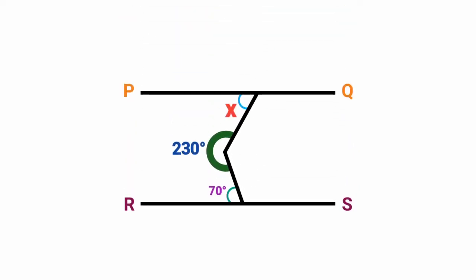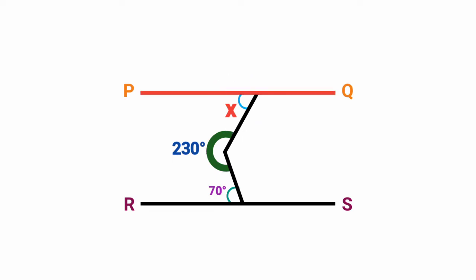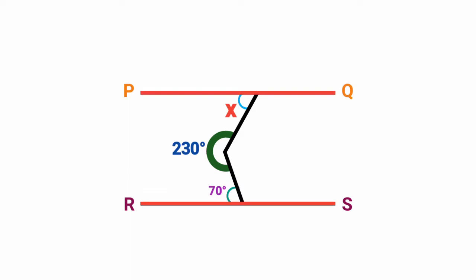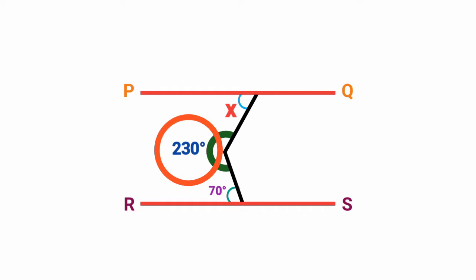Look at this question — you are asked to find the value of angle X. Line PQ is parallel to line RS. You are given this angle to be 70 degrees and this one to be 230 degrees. What should we do here?